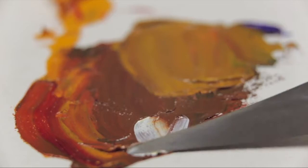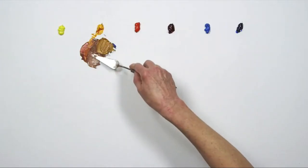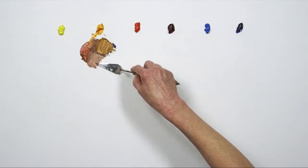You can see that adding a bit of titanium white creates a cool, lighter value brown. But to maintain the richness of the pigments, I try to avoid white.